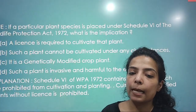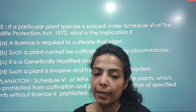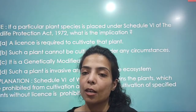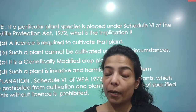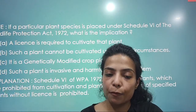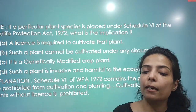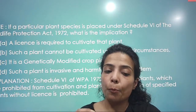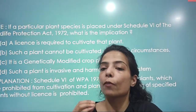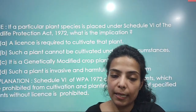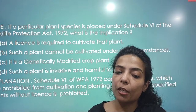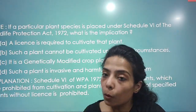If a particular plant species is placed under Schedule 6 of the Wildlife Protection Act 1972, what is the implication? Generally we read about Schedule 1, 2, or 5, but this was a unique question about Schedule 6 for plant species. Schedule 6 covers plant species whose cultivation is prohibited without a license. Schedule 6 of the Wildlife Protection Act 1972 contains plants which are prohibited from cultivation and planting; cultivation of specified plants without a license is prohibited.